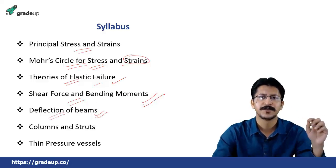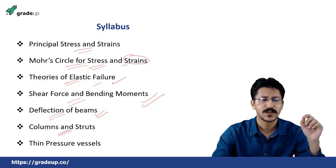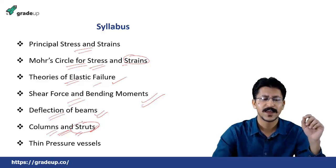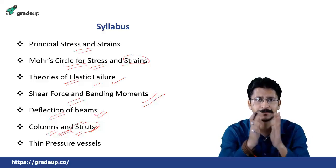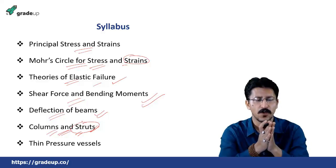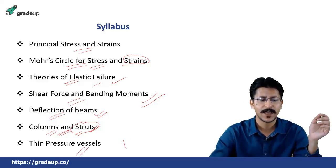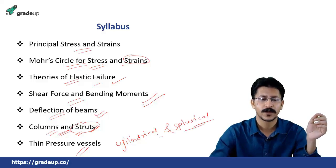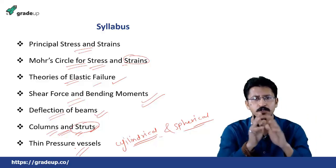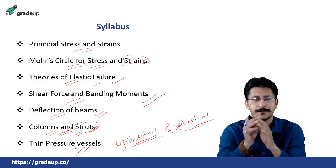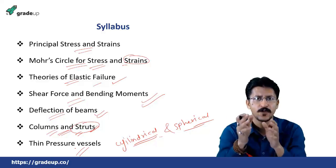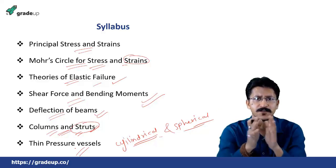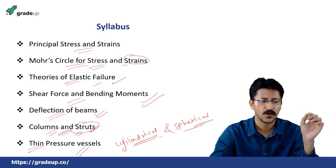Deflection of beams — questions asked almost every time. Then columns and struts — the analysis of both is almost the same, though there is a basic difference between columns and struts, and we will cover the theory of columns in a conceptual manner. Finally, thin pressure vessels — of two types, cylindrical and spherical — both are almost equally important. There is also a thick pressure vessel topic, but that is not included in the GATE syllabus, so please discontinue studying it for GATE as the syllabus is focused only on thin pressure vessels.